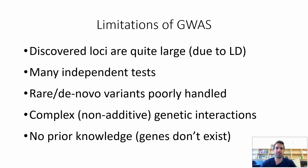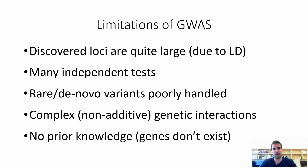GWAS has really been very useful over the last two decades and provided many robust associations and a lot of insight into many diseases, but it also has some pretty profound limitations. First, the loci that are discovered with GWAS tend to be very large because of the problem of linkage disequilibrium, which makes it very hard to pinpoint the exact causal variant. Also, because we test each variant independently, we have a very strong burden of multiple testing, and we lose a lot of statistical power. This problem is especially grave when we deal with rare and even novel variants, which GWAS really has a hard time handling, because if a variant appears only a handful of times in a given cohort, we will never have sufficient statistical power to detect it.